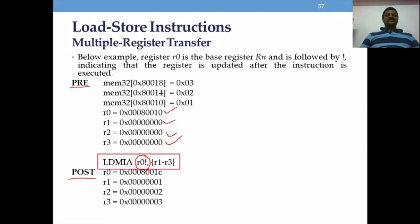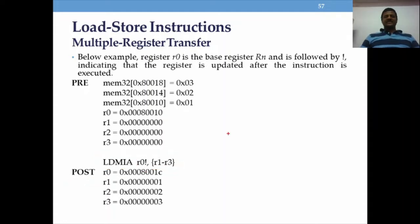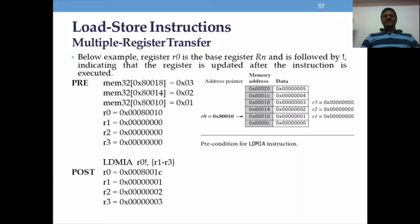The content of memory: r0 is pointing at memory address 0x80010. In that memory location, 1 is stored; the next memory location holds 2, then 3. We are working with 32-bit data, so the addresses increment by 4: 0x10, 0x14, 0x18. Now we'll look at this with a diagrammatic arrangement.